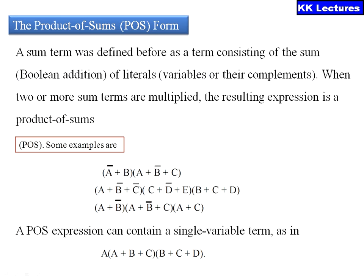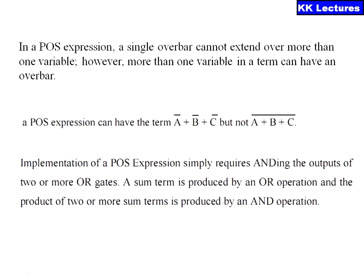The product of sums means sum terms — defined as terms consisting of a sum of literals — when two or more sum terms are multiplied, the resulting expression is a product of sums. A POS expression can also contain a single variable term, for example A · (A+B+C) · (B+C+CD). In a POS expression, a single over bar cannot extend over more than one variable; however, more than one variable in a term can have an over bar. Each variable needs its own complement, so a POS expression can have a term Ā B̄ C̄ but not (A+B+C)‾.